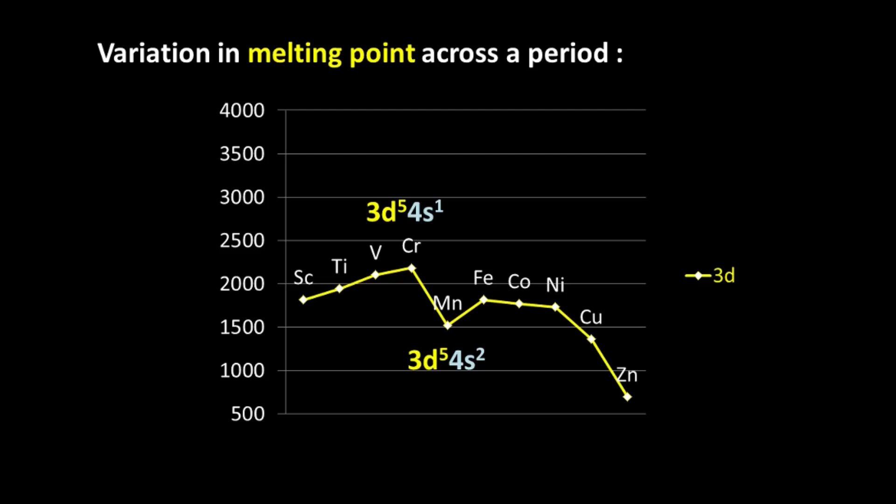Now there is an interesting correlation out here that I would like to mention as it is mentioned in most books. If you look at this melting point trend, you can actually correlate it to the number of unpaired electrons. So from scandium to titanium, vanadium, chromium, the number of unpaired electrons keeps increasing.